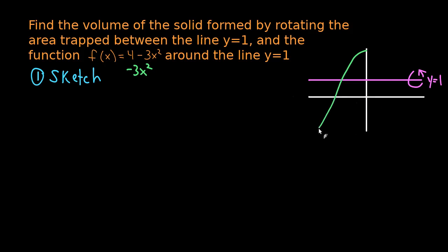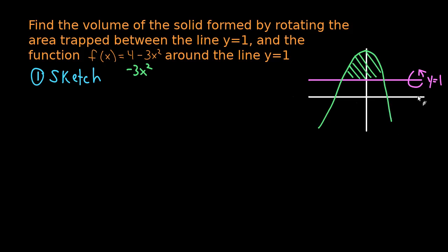So the function looks something like this, and now we can see the area trapped between the function and the horizontal line y equals 1. We're going to take that area and rotate it around the line y equals 1, and that's going to give us some solid shape — something that looks like a wonky American football. That's what we need to find the volume of.